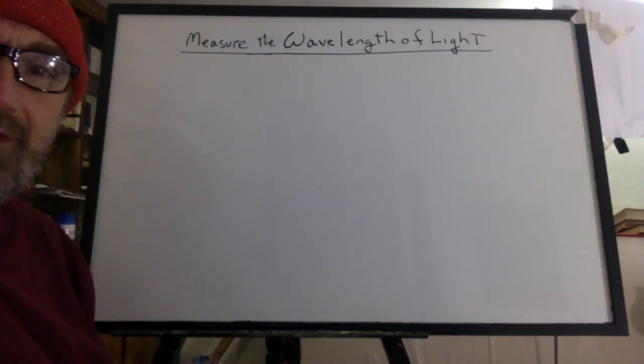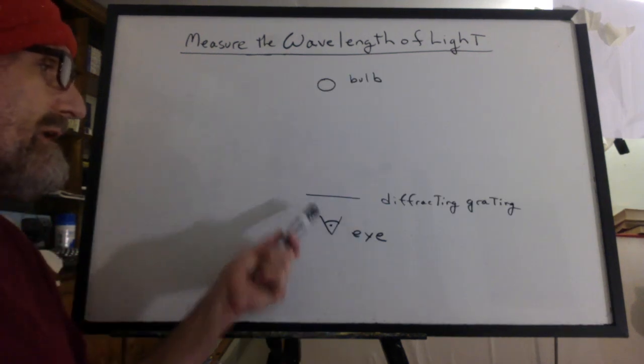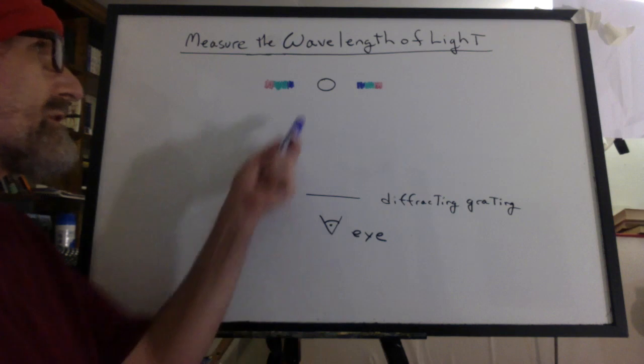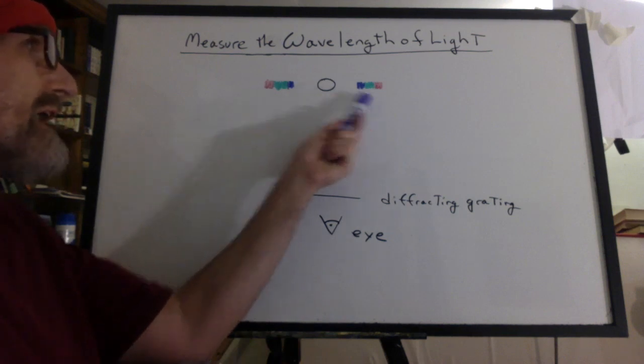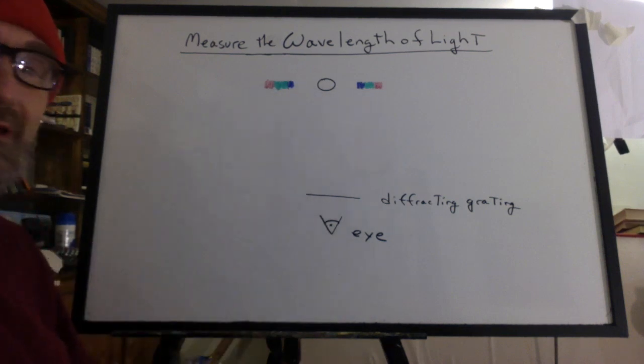Let's talk about the measurements and do the calculations. So how do we measure the wavelength of light? We have the light bulb, we have the diffraction grating, and we have your eye. When you look at the light bulb, you see off to the side the first maximum for each color.